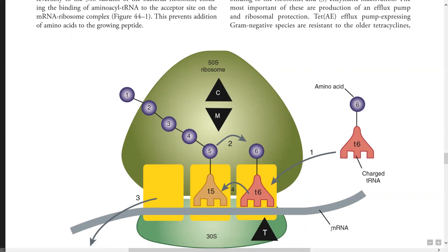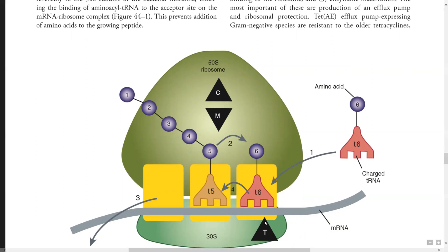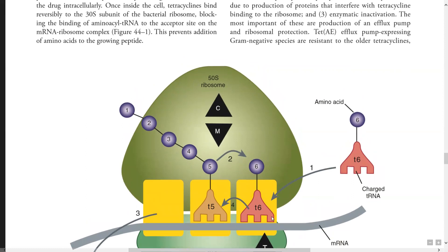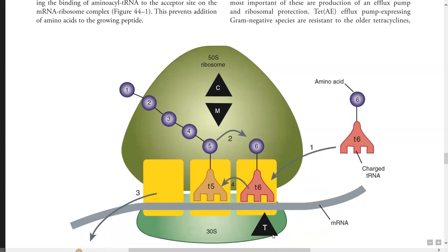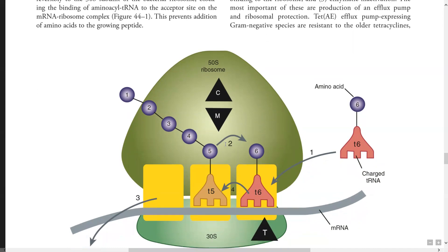Once bound to the 30S subunit, tetracycline blocks the binding of aminoacyl tRNA to the acceptor site on the mRNA-ribosome complex. The mRNA-ribosome complex is formed because mRNA is attached to the 30S subunit of the ribosome. Tetracycline attaches at this position and blocks the charged tRNA from binding to the acceptor site, so there is no further addition of amino acids to the growing peptide chain.